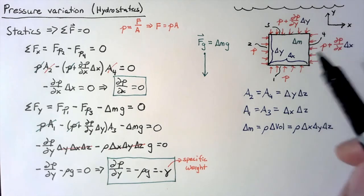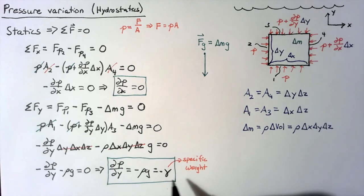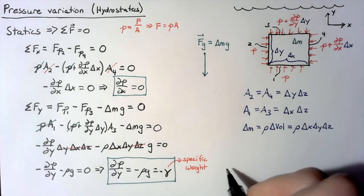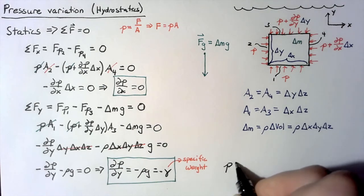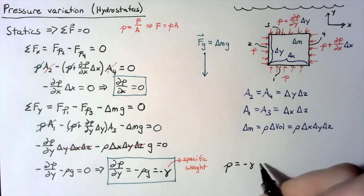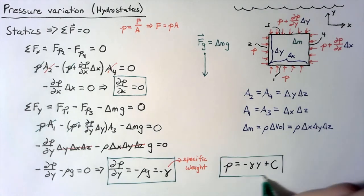So the pressure does actually vary in the y direction, even if no motion is happening. So we can come up with an equation to determine what p is going to be through integration. It's just going to be negative gamma times y plus a constant. So this is our key result from our video.